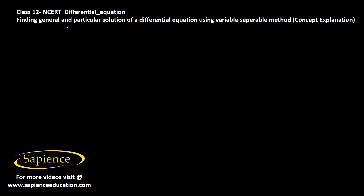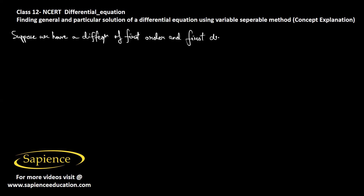Here we need to explain the concept of finding a general and particular solution of a differential equation using the variable separable method. Suppose we have a differential equation of first order and first degree, which is in the form dy/dx equals some function f(x, y). Suppose this function f(x, y) can be represented as the product of two functions g(x) and h(y).